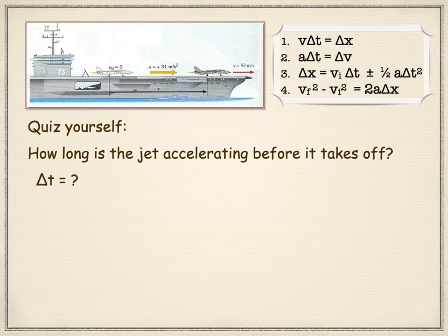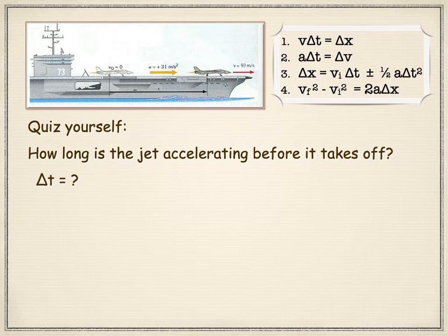Kinematic equation two has acceleration, delta t, and delta v. We're given the acceleration, delta t is our unknown, and delta v we can easily calculate: v-final is 93, v-initial is zero, so delta v is 93 minus zero. So kinematic equation two can be used easily given the acceleration and the two velocities to quickly calculate delta t.